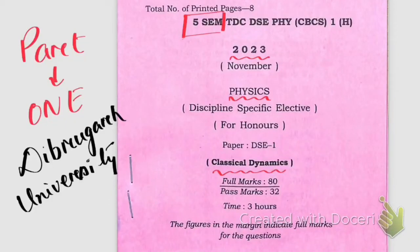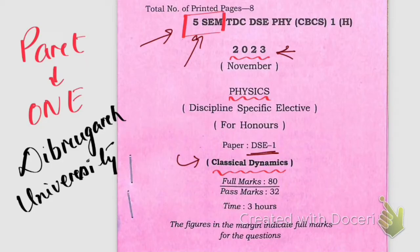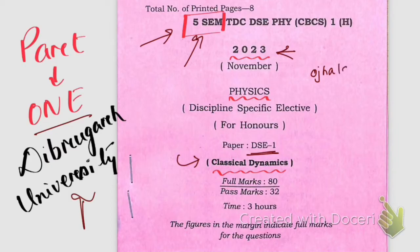Hello friends! In this video, we're going to start solving classical dynamics DAC paper one of fifth semester 2023, and this is part one of De Brugge University. Before we solve, please subscribe to the channel, hit the thumbs up button, and share with your friends to inspire me to create new content. You can also follow me on Instagram: my ID is Lakhy-ajit-123.